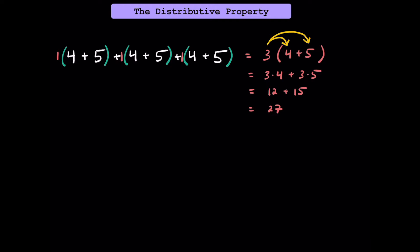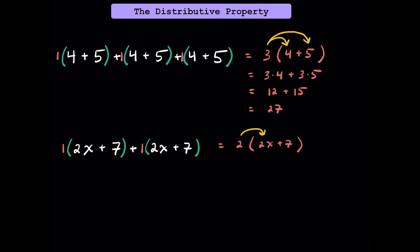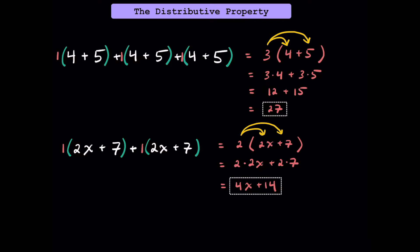Now let's try an algebraic expression. Here we have 2x plus 7 plus 2x plus 7 — two of these 2x plus 7s. Using the identity property, we have 1 of each, and adding those together, we have 2 of these 2x plus 7s. Using the distributive property, we have 2 of these 2x's and 2 of these 7s. Two of the 2x's make 4x, and two of the 7s make 14. Unlike the numerical example, we're left with a variable expression 4x plus 14 because we don't know the value of x.